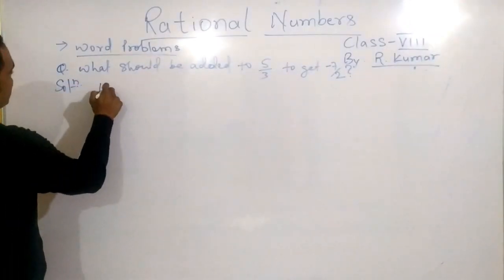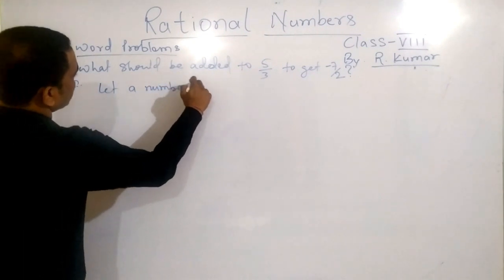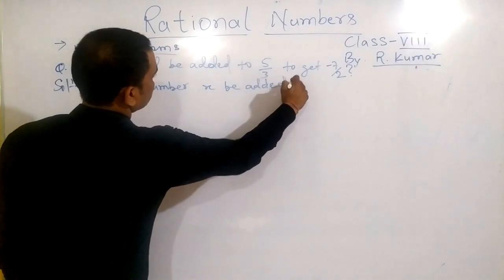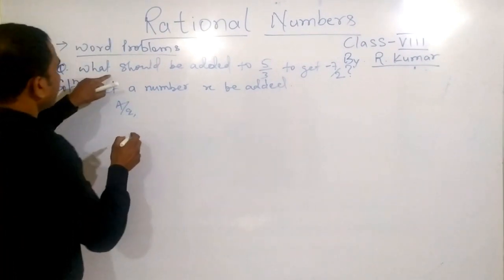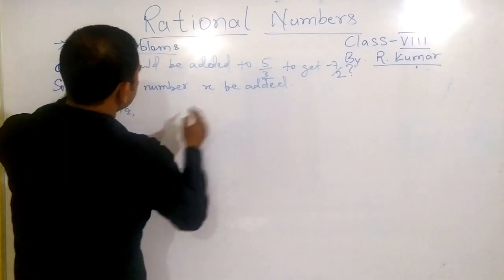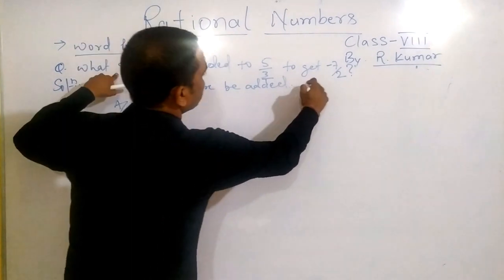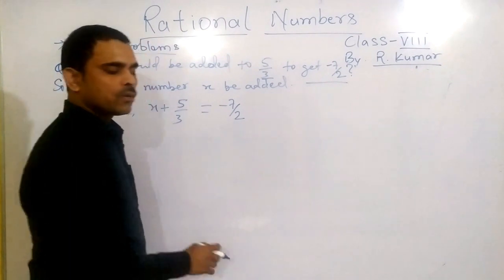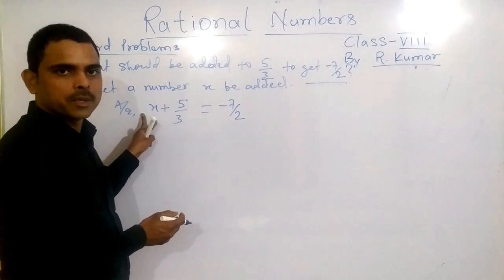So you write in solution: let a number x be added. According to the question, if you go through it, x be added to this, x plus 5 by 3 to get this equals to minus 7 by 2. So once you get an equation, after that you need to solve for the unknown term.